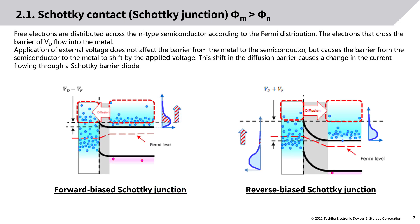Free electrons are distributed across the N-type semiconductor according to the Fermi distribution. The electrons that cross the barrier of VD flow into the metal. Application of external voltage does not affect the barrier from the metal to the semiconductor, but causes the barrier from the semiconductor to the metal to shift by the applied voltage. This shift in the diffusion barrier causes a change in the current flowing through a Schottky barrier diode.